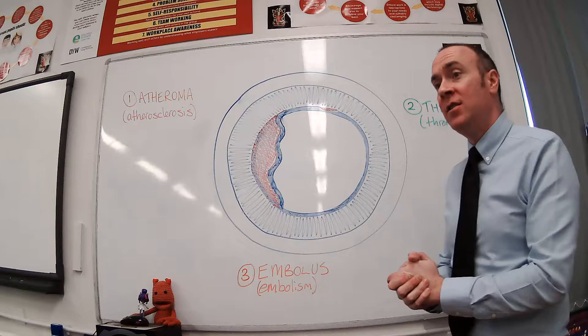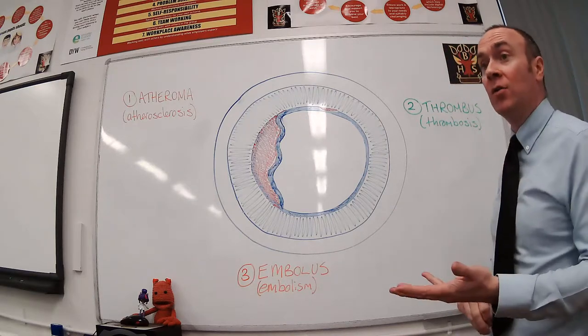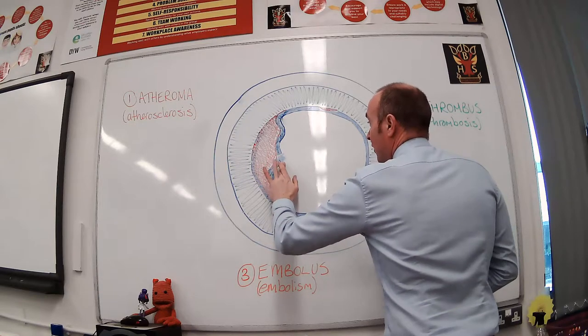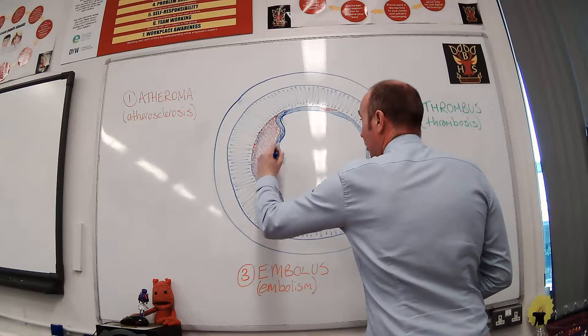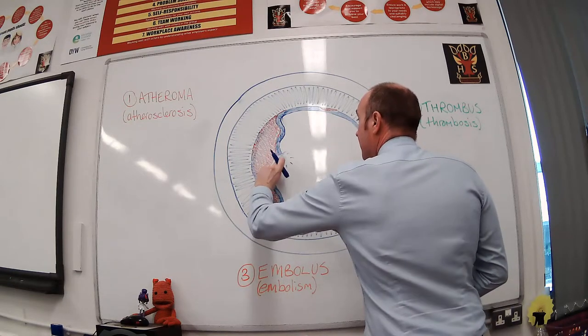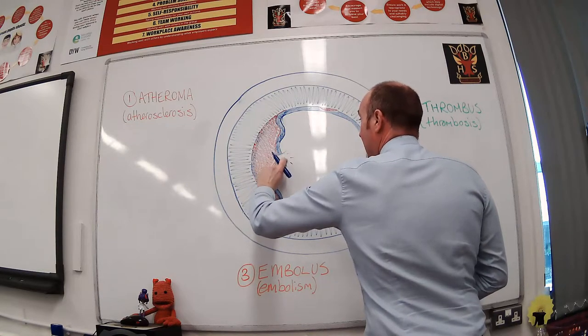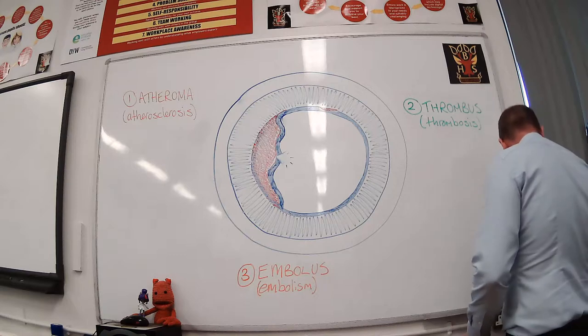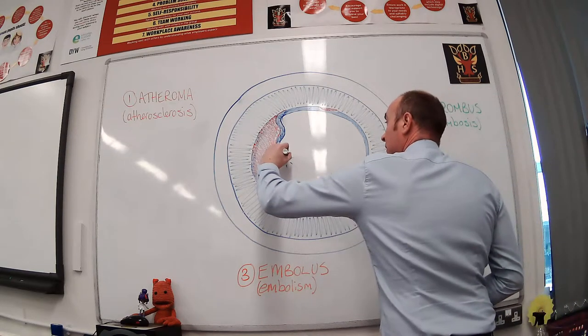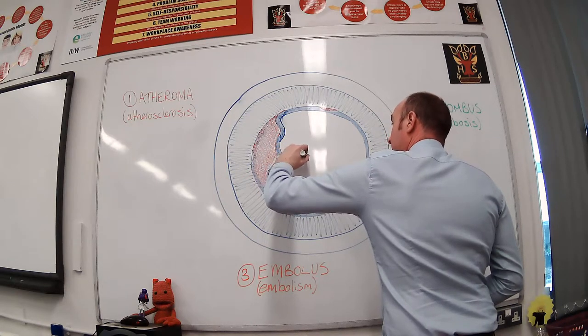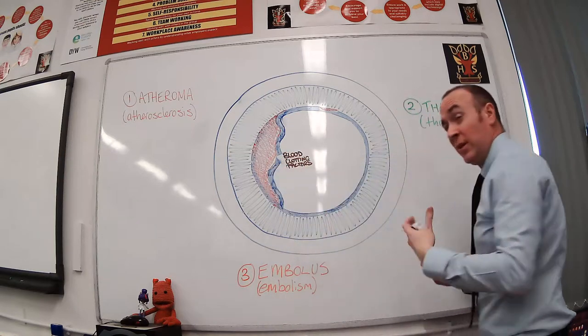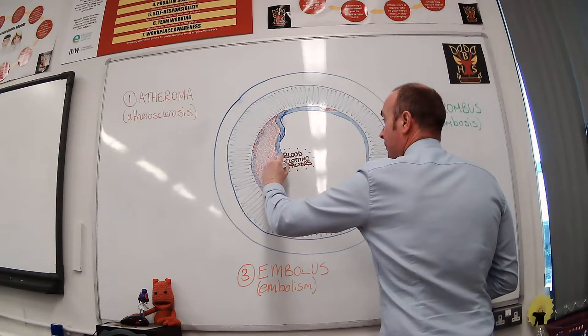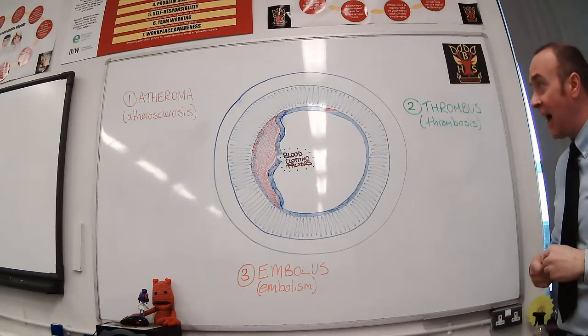Now, this is a problem, but it isn't anywhere near as bad as what happens when a thrombus forms. In order for that to happen, there has to be a bit of endothelial damage. You may remember from your immunology topic that when epithelial cells are damaged, blood clotting factors are activated. Blood clotting factors will basically be floating about in the blood all the time in an inactive form, but if there's any endothelial cell damage inside the blood vessel, these blood clotting factors are activated, and that's when the trouble starts.